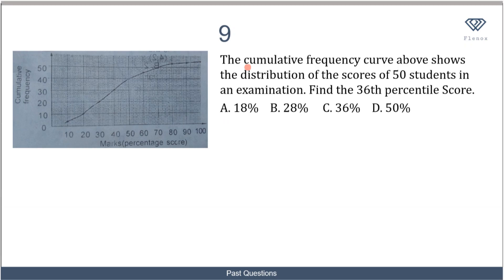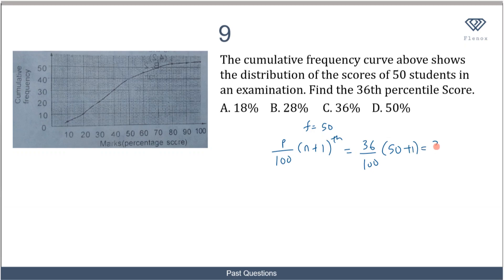In the last question, a cumulative frequency curve shows the distribution of scores of 50 students in an examination. We need to find the 36th percentile score. With n = 50, the position of the 36th percentile is given by (p / 100) × (n + 1) = (36 / 100) × 51 = 18.36. So the 36th percentile lies at cumulative frequency 18.36.